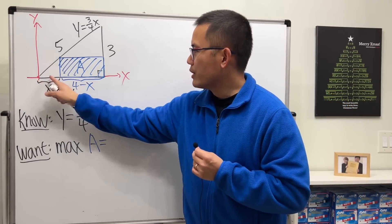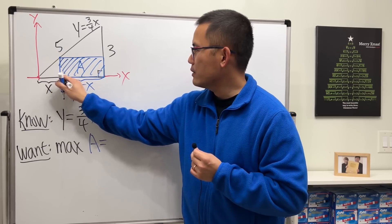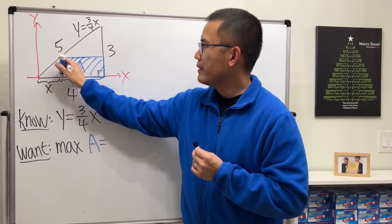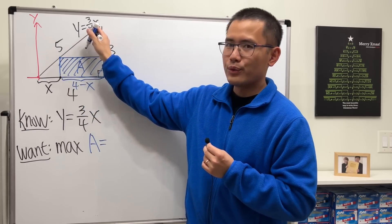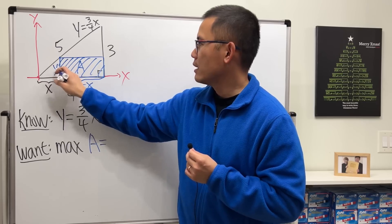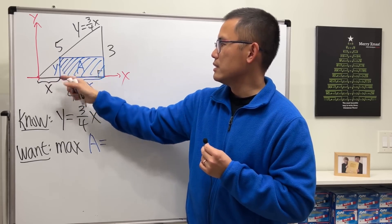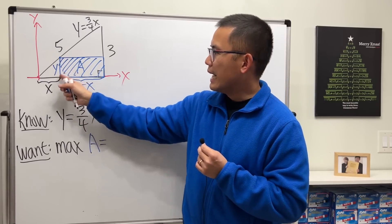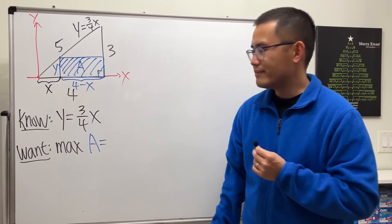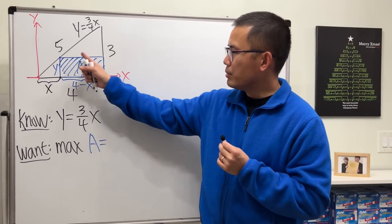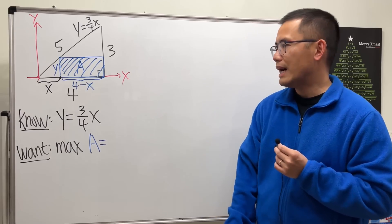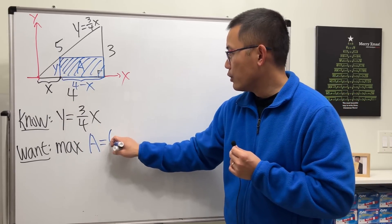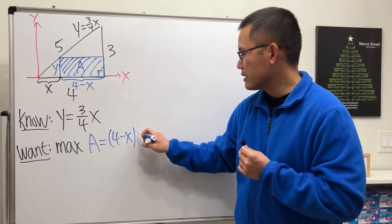Because from the y-axis to the point is x, if you have a point on the hypotenuse with that x value you can go up and get the y value. So the height of the rectangle is just y. For the blue rectangle, the area is base times height — that's (4 minus x) times y.